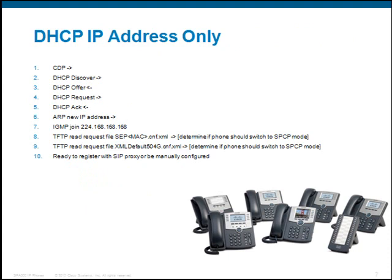In the event that the DHCP server supplies only an IP address, the phone starts up and will perform steps 1 through 10. First it does Cisco Discovery Protocol, then a DHCP discover, gets a DHCP offer back, and then the phone performs a DHCP request. It will then receive a DHCP ACK from the DHCP server and will ARP for its new IP address. Then it sends an IGMP join to join the multicast paging group. Step 8, it sends out a TFTP read request for the SEP — as in SIP endpoint — MAC.cnf.xml.